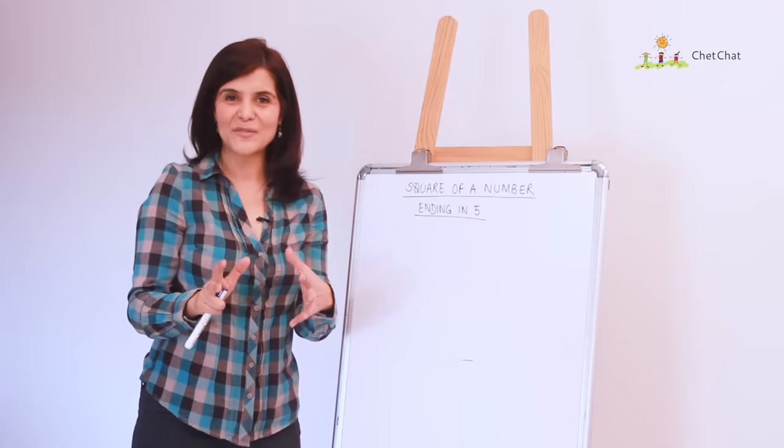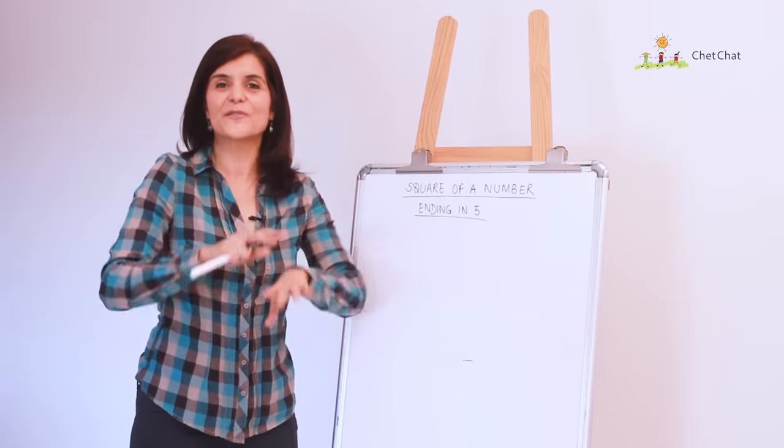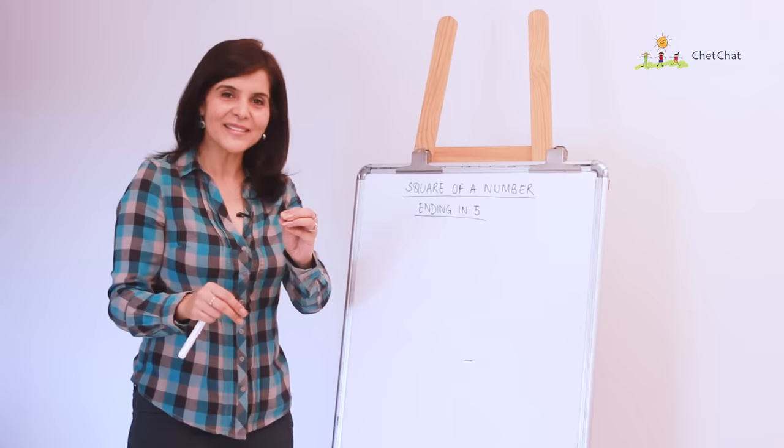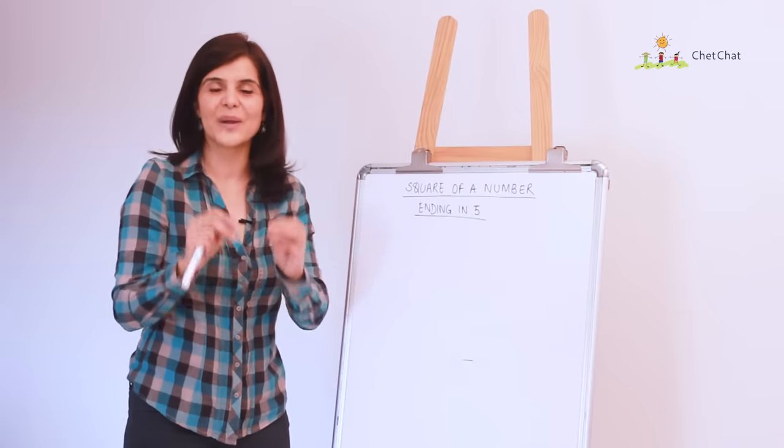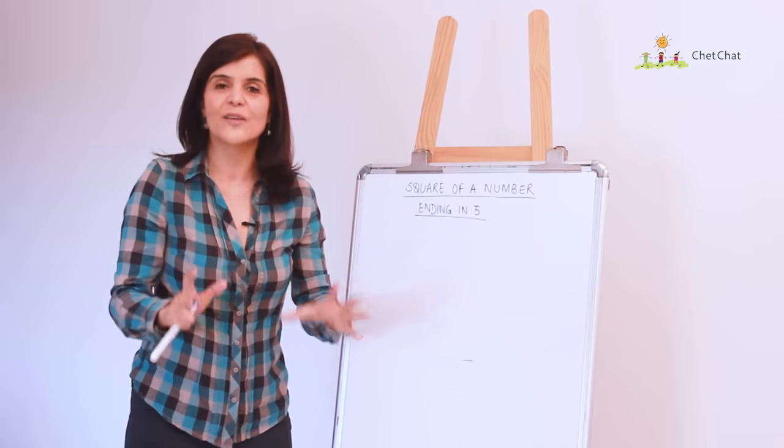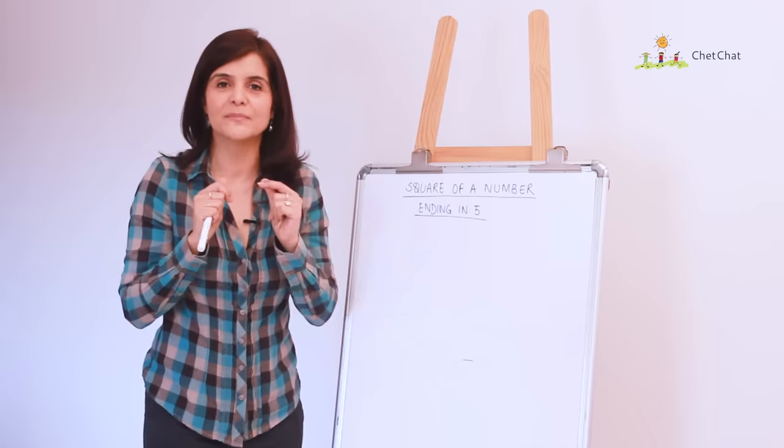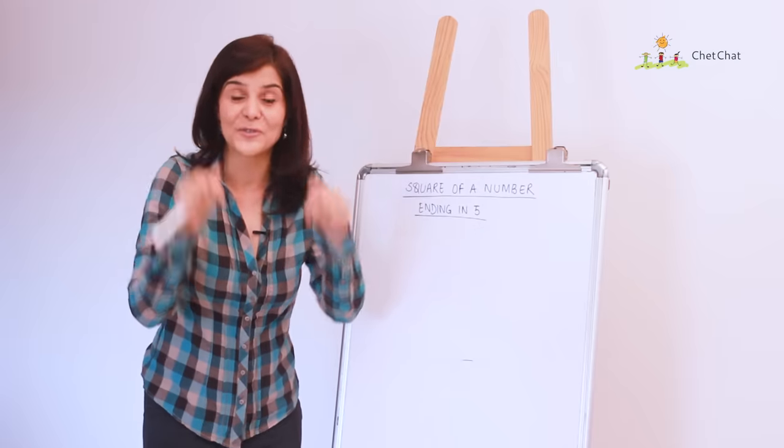And trick number 5 is to find the square of any number ending in 5. This magical trick will help you find this square at lightning speed. So, what is the square of 85? Quick, write it down in the comment section right now.